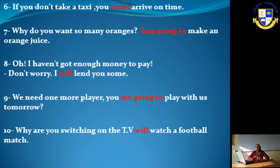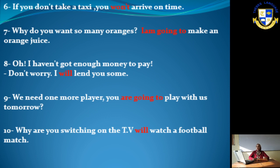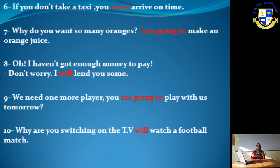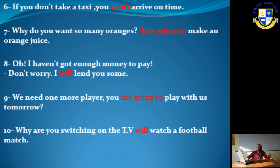Question six: 'If you don't take a taxi, you won't arrive on time.' Question seven: 'Why do you want so many oranges?' The answer is 'I'm going to make an orange juice' — meaning you had already planned to make orange juice but didn't have oranges, so that's why you needed them.